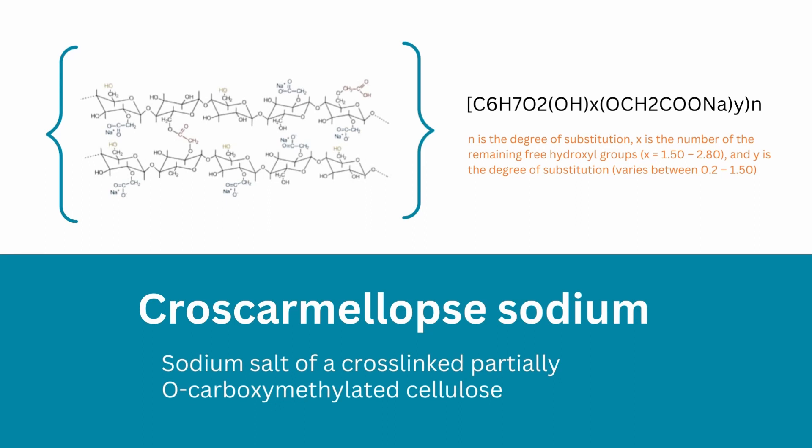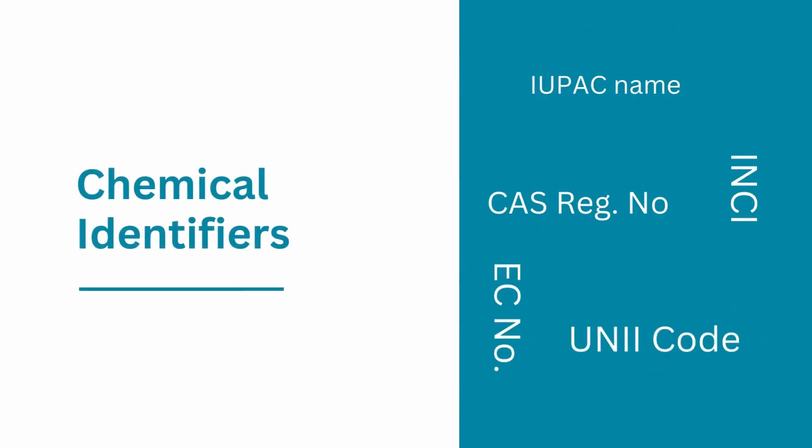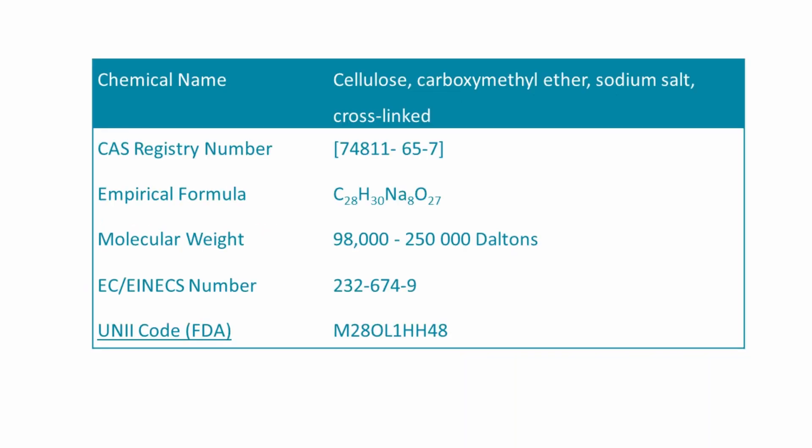Cross-linking is then achieved when the sodium carboxymethylcellulose is treated with heat in the presence of the acid. So from a chemical point of view, croscarmellose sodium is the sodium salt of a cross-linked partially O-carboxymethylcellulose — it's a mouthful, but it's what it is. The general chemical structure and formula are shown here. Chemical identifiers are codes used to identify chemical substances based on information like atoms, bond connectivity, stereochemistry, and electronic charge. Here are its key chemical identifiers.